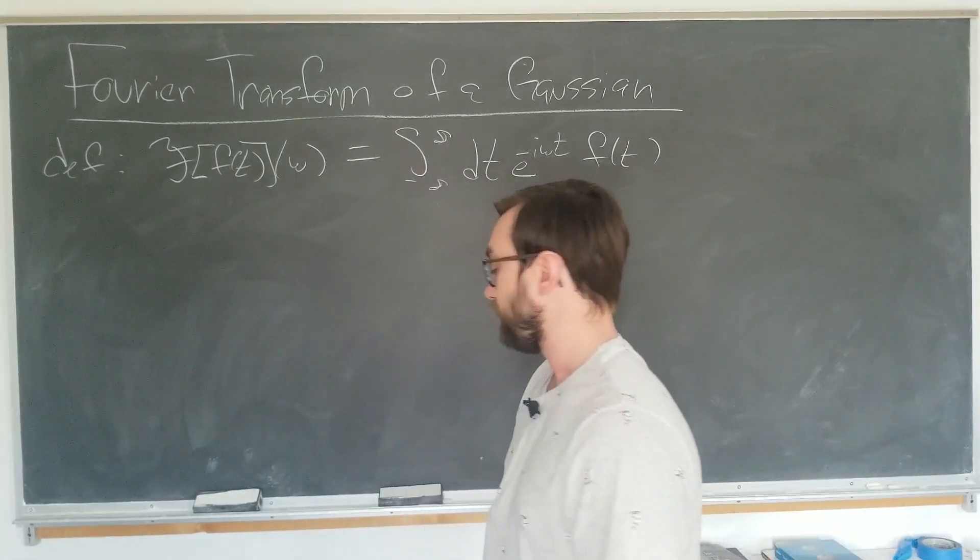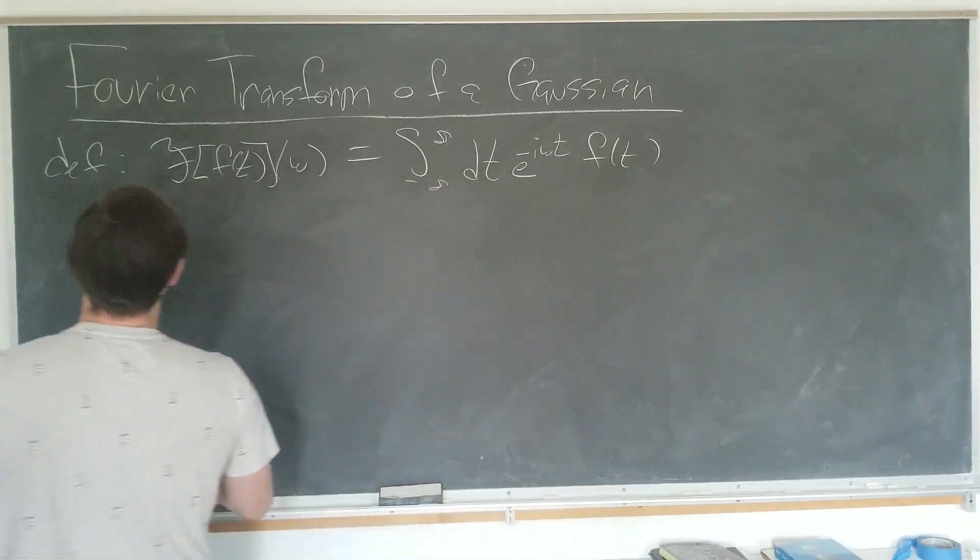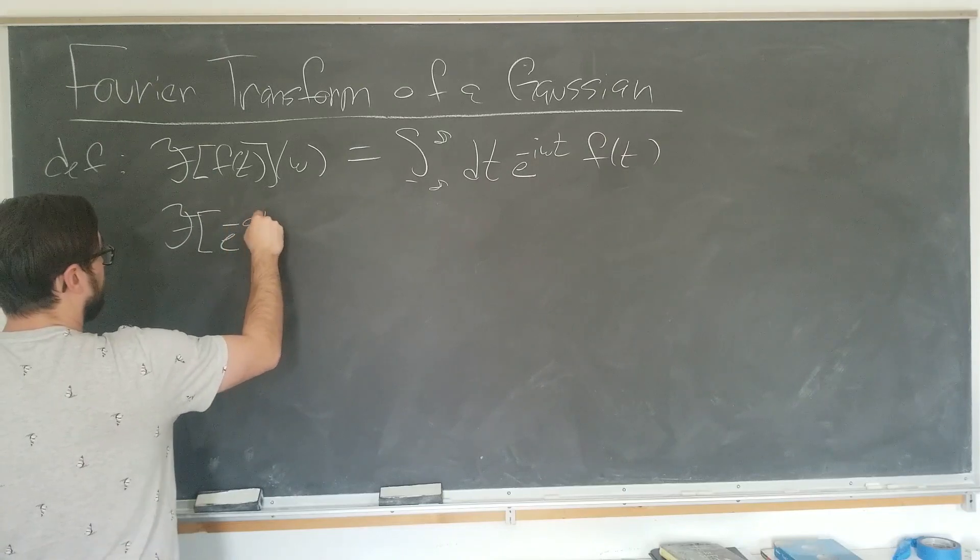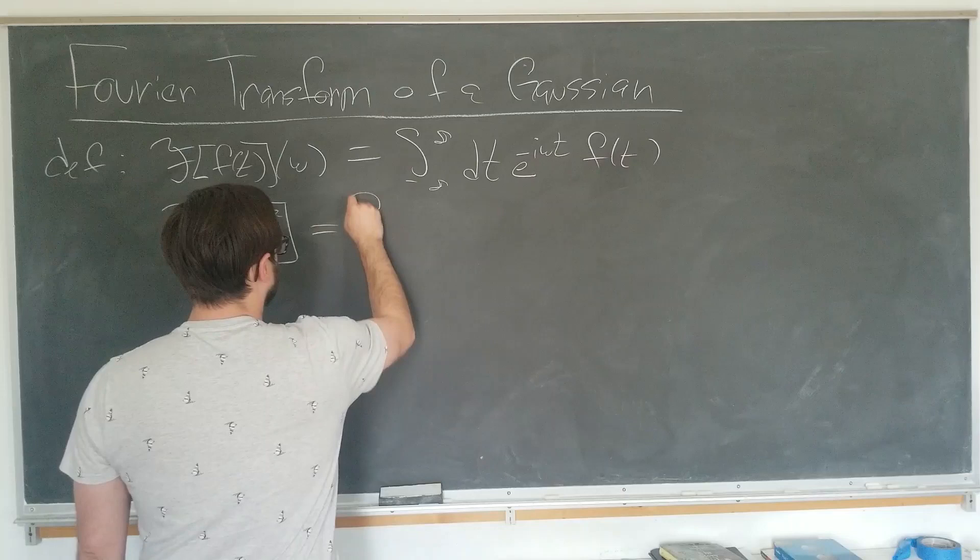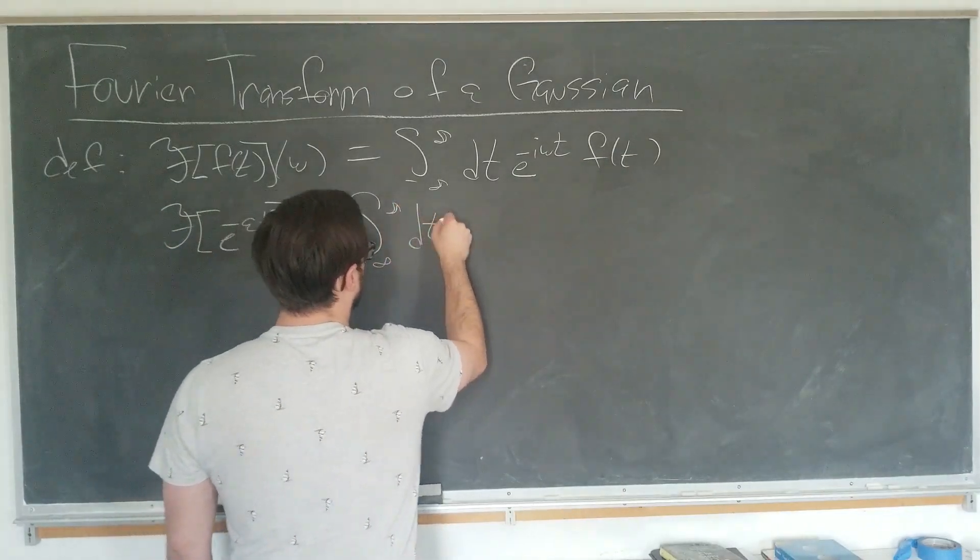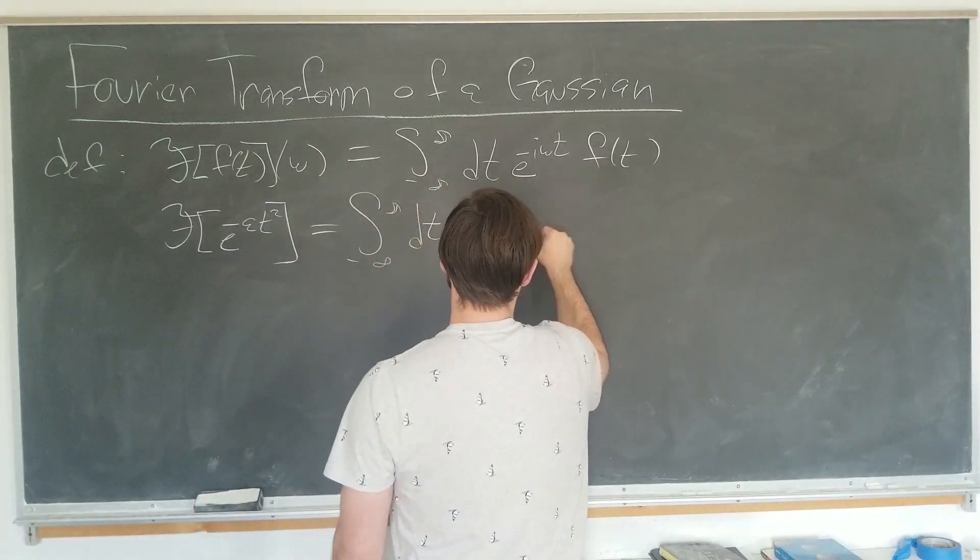So let's go ahead and just start computing what we want to do. The Fourier transform of a Gaussian, which is e to the minus a some constant t squared, if we write it out, is the integral from minus infinity to infinity respect to time e to the minus i omega t times e to the minus a t squared.